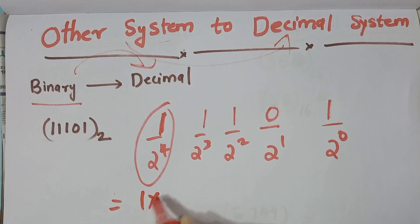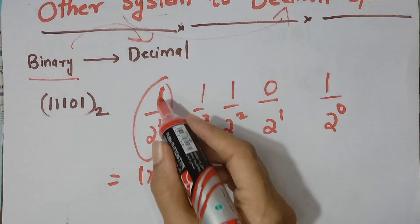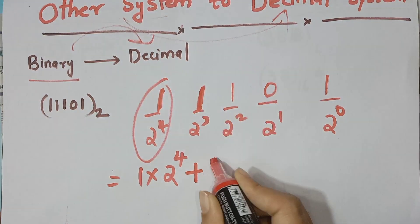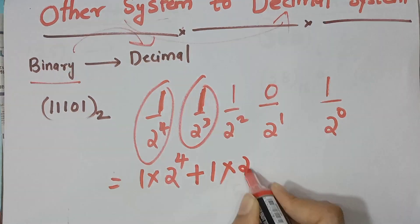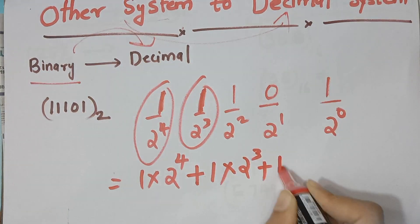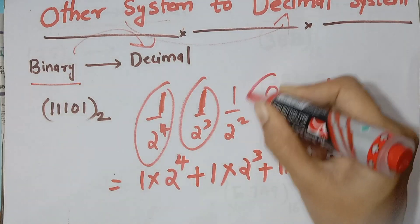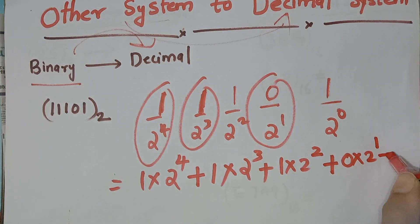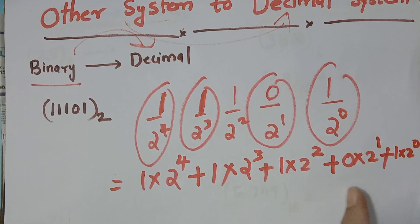So we compute: 1 into 2 raised to 4, plus 1 into 2 raised to 3, plus 1 into 2 raised to 2, plus 0 into 2 raised to 1, plus 1 into 2 raised to 0.